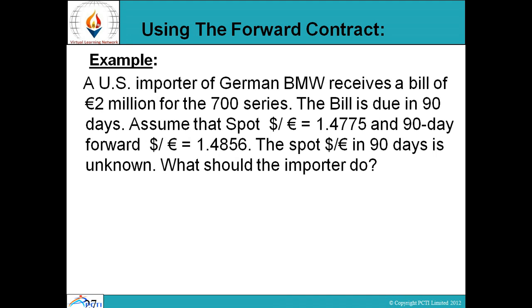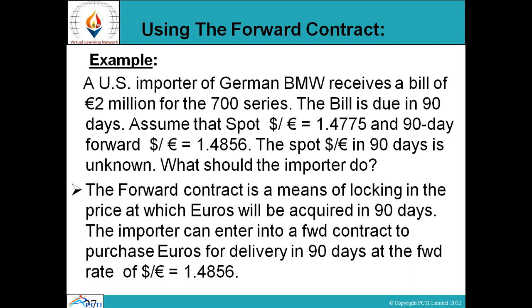Using the forward contract — example: a US importer of German BMW receives a bill of 2 million euros for the 700 series; the bill is due in 90 days. Assume spot dollar per euro equals 1.4775 and 90-day forward dollar per euro equals 1.4856. The spot rate in 90 days is unknown. The forward contract is a means of locking in the price at which euros will be acquired in 90 days. The importer can enter into a forward contract to purchase euros for delivery in 90 days at the forward rate of dollar per euro equals 1.4856.